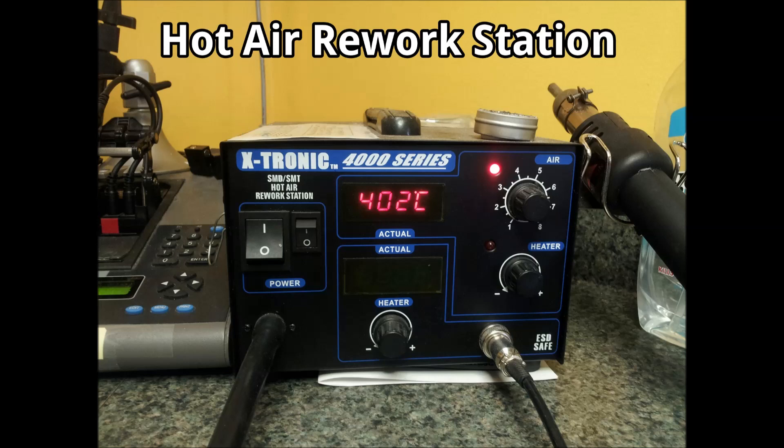You're going to need a solder rework station. The one that we're using is an X-Tronic 4000 series. You're going to have the temperature set up on your hot air gun to about 430 to 460 degrees on this one.